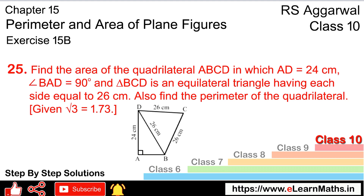Let's do question number 25 of exercise 15B, that is perimeter and area of a plane figure. Question number 25 is: find the area of the quadrilateral ABCD, where AD is 24 cm, angle BAD is 90 degrees, and BCD is an equilateral triangle with each side equal to 26 cm. Also find the perimeter of the quadrilateral. The value of root 3 is 1.73.